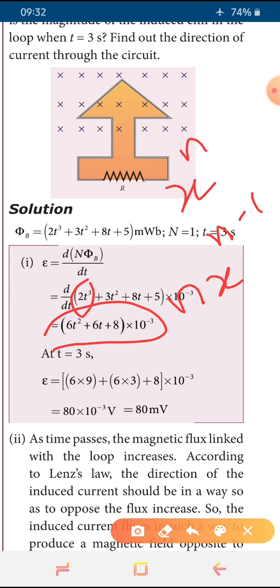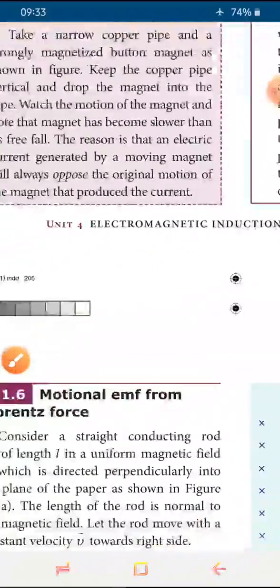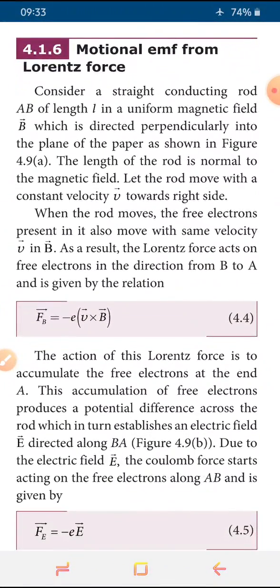The magnetic flux linked with the loop increases as time passes. As per Lenz's rule, the direction of induced current always opposes the flux which is the source used to increase it. The induced current flows to produce a magnetic field opposite to the given field — perpendicularly outward. Therefore the induced current flows in an anti-clockwise direction.